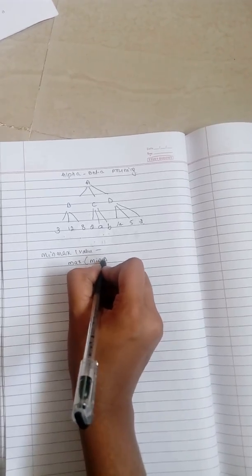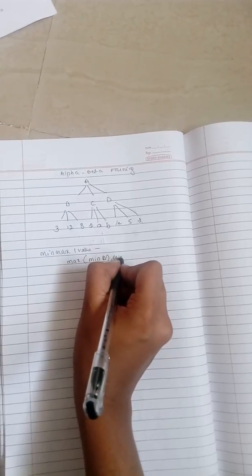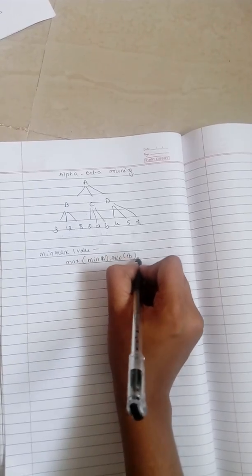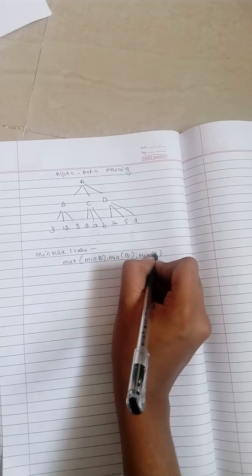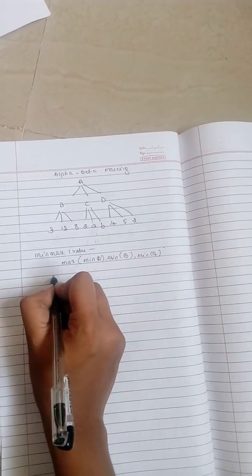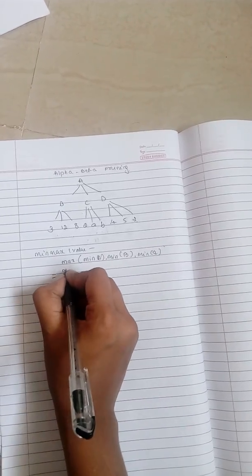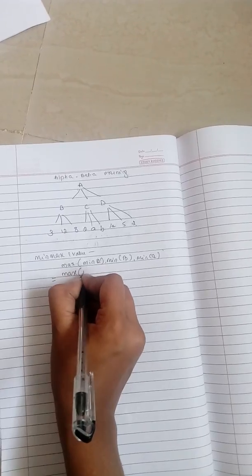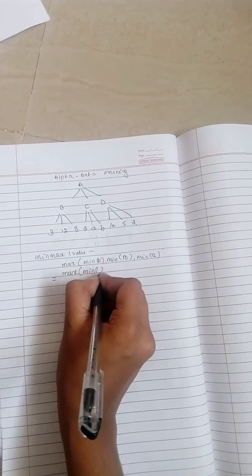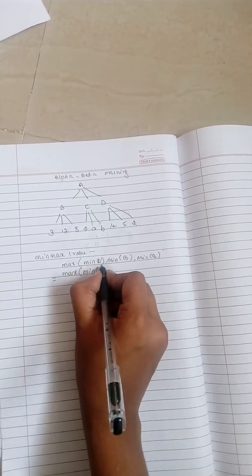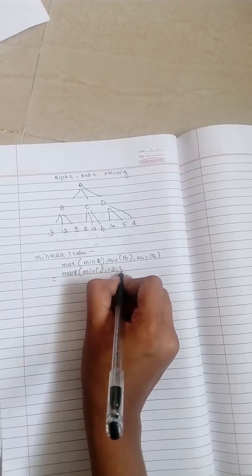If you are substituting the values, what will be the values? Maximum of minimum in 2, 3, 12, and 8, minimum in 2 - in this the unknown node I have taken as A and B - and minimum of 14, 5, and 2.